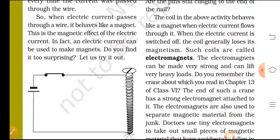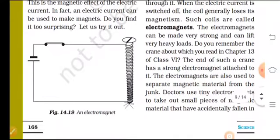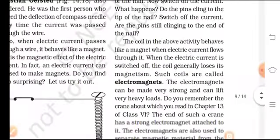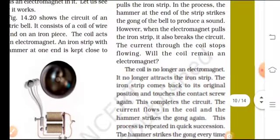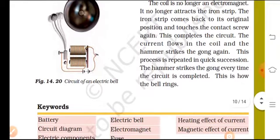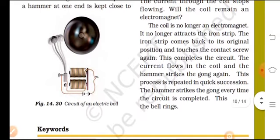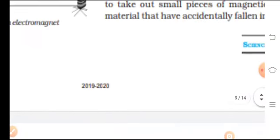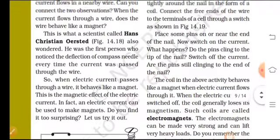In fact, an electric current can be used to make magnets. Do you find it too surprising? Using this magnetic effect of electric current, we can make powerful magnets. We will study this as electromagnets, or you can say electric bells also use electromagnets produced by electricity, which we will discuss in the next class.